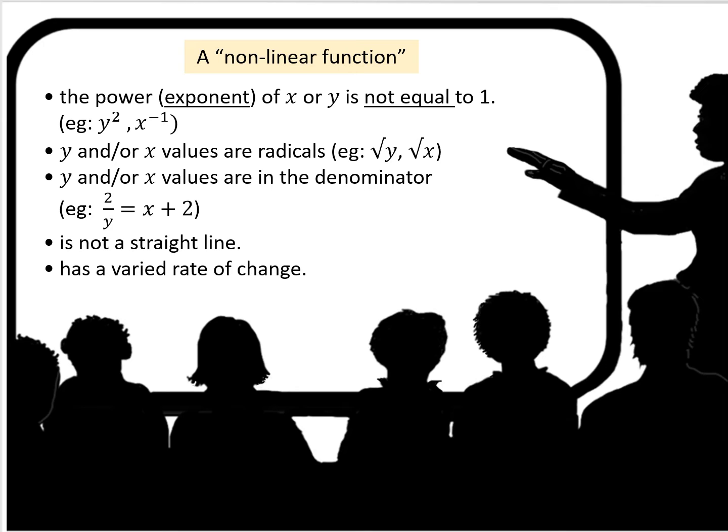It's not a straight line when you see it on a graph, and it has a varied rate of change. So they might look like lines, but if you check the slope, you'll see that the slope between any two points is not going to be the same.